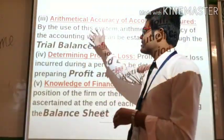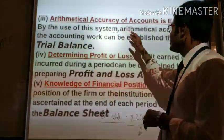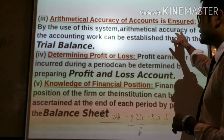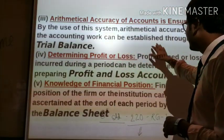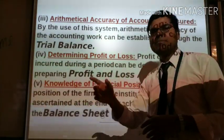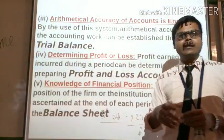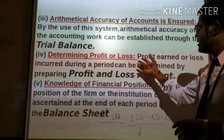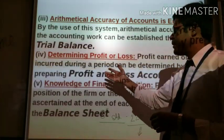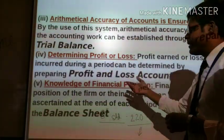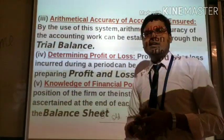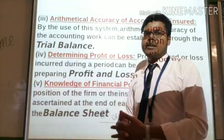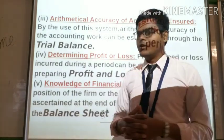Next is mathematical accuracy. The mathematical accuracy of accounts is ensured. By the use of this system, mathematical accuracy of the accounting work can be established through the trial balance. Next, determining profit or loss — profit earned or loss incurred during a period can be determined by preparing the profit and loss account. At the end of the financial year, we know whether our organization has made a profit or incurred a loss.